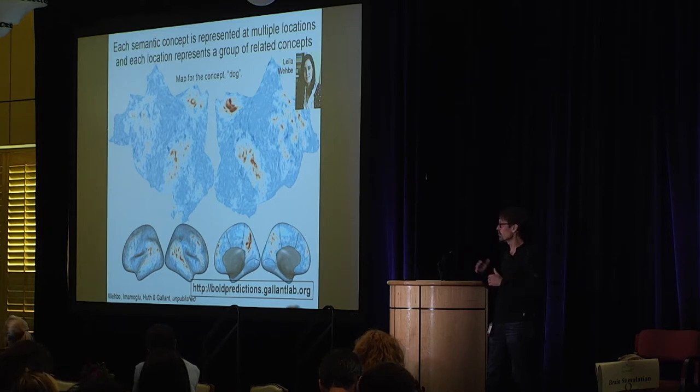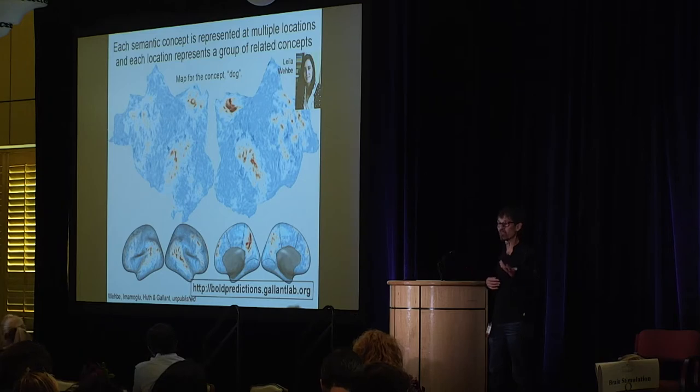For example, one part of the brain might reflect how a dog sounds, another part might reflect how a dog looks, and an area of the prefrontal cortex might represent information about the time you were a little kid and the dog bit you and you don't like dogs. All that information has to be mapped in these complicated constellations of meaning.